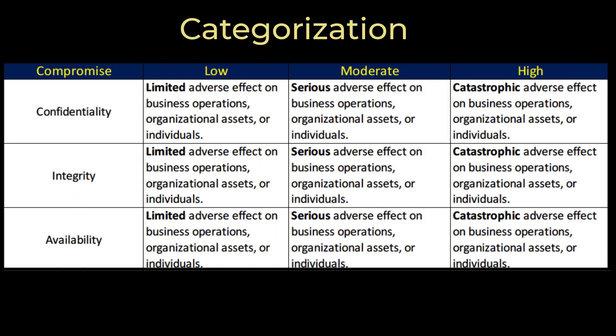Categorization is closely related to business continuity — it's about keeping data available, accurate, and relevant for business operations. Each element of the CIA triad receives its own categorization, enabling effective assessment of how to achieve each for every data set. Watch the linked video above for a detailed look at data classification and categorization.